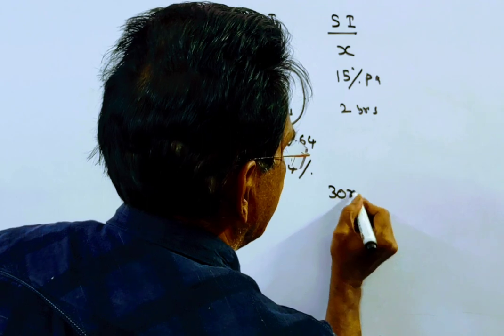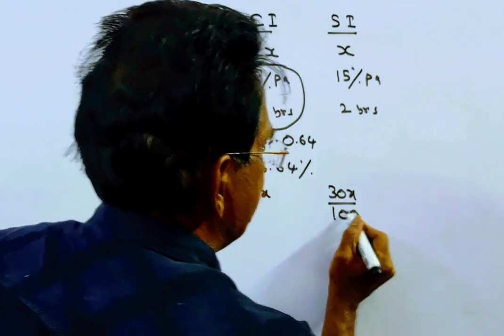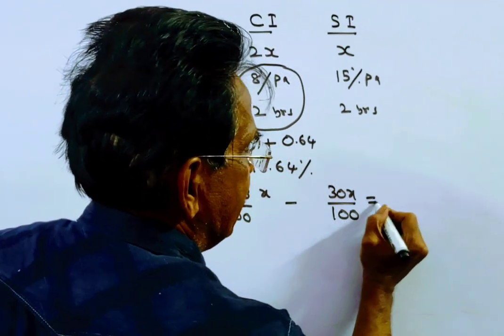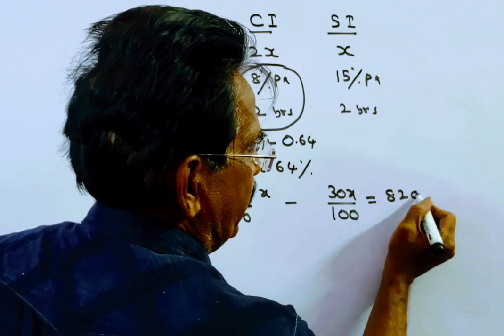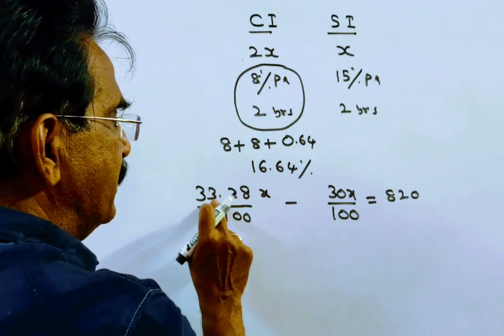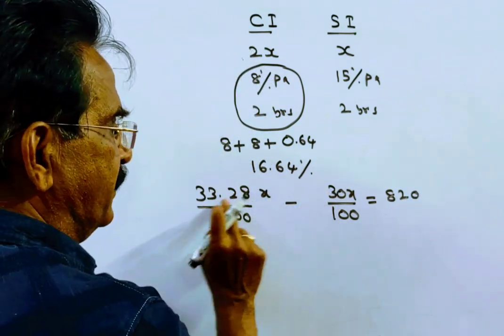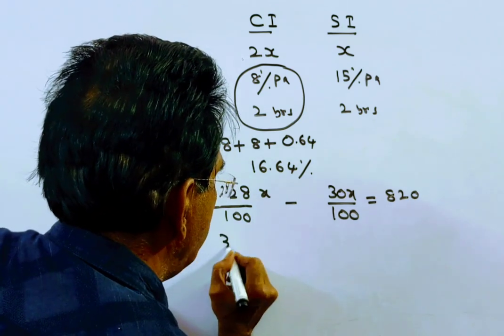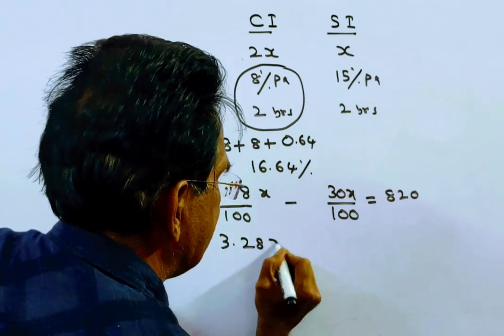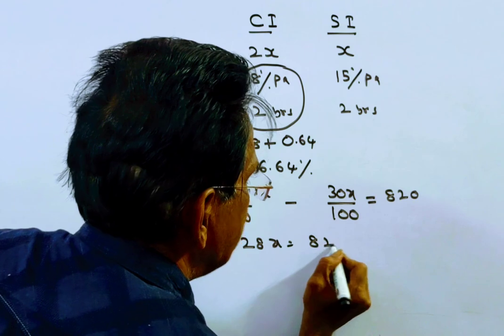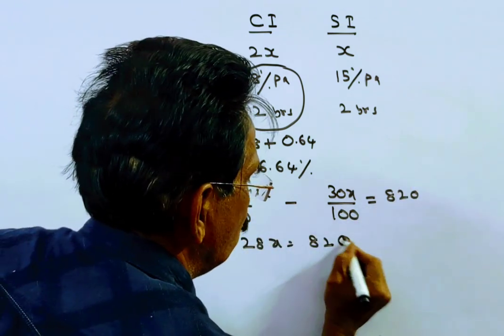The difference between CI and SI is 820 rupees. So 33.28 minus 30 equals 3.28X, which equals 82,000.